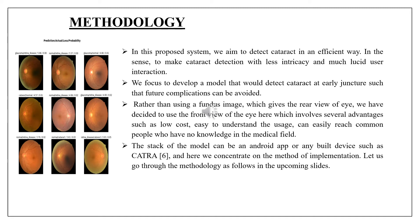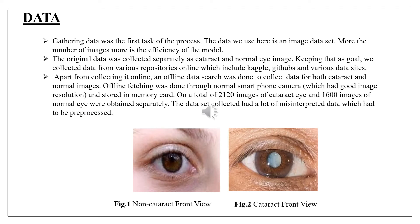The stack of the model can be an Android app or any built device. Gathering data was the first task of the process. The data used here is an image dataset — more images means higher efficiency of the model. The original data was collected separately as cataract and normal eye images. Data was collected from various online repositories including Kaggle, GitHub, and various data sites. Offline data collection was also done using a normal smartphone camera. A total of 2120 images of cataract and 1600 images of normal eyes were obtained. The dataset had a lot of misinterpreted data which had to be pre-processed.